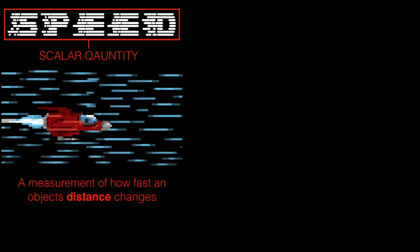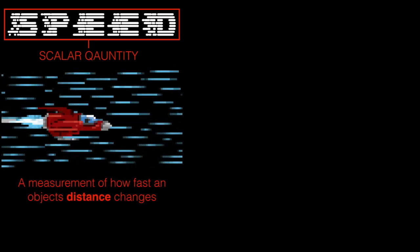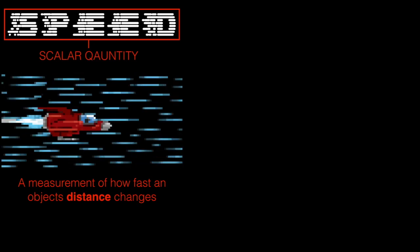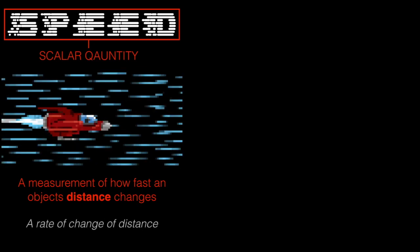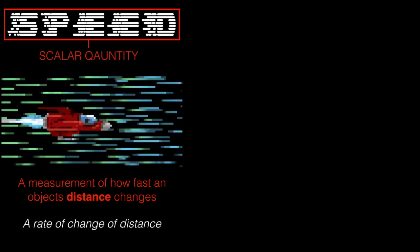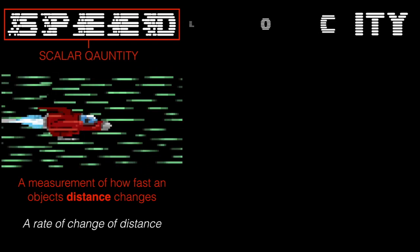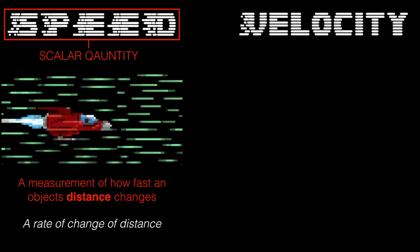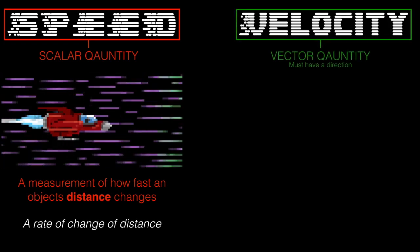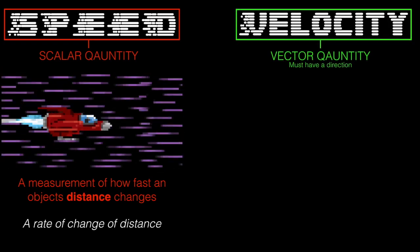The first thing we need to know about speed is that it is a scalar quantity. What it is, basically, is a measurement of how fast an object's distance changes — so it's a rate of change of distance. Velocity, on the other hand, is kind of similar, however it is a vector quantity, so that means it must have a direction.